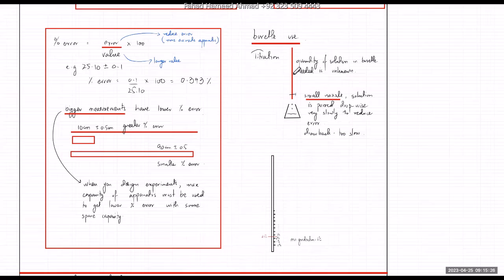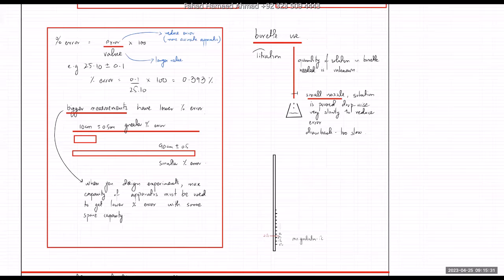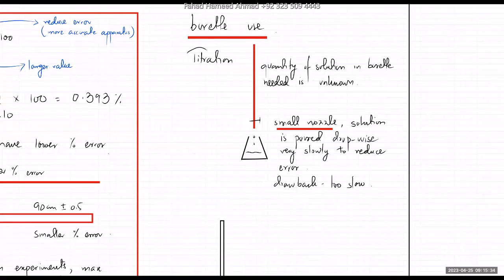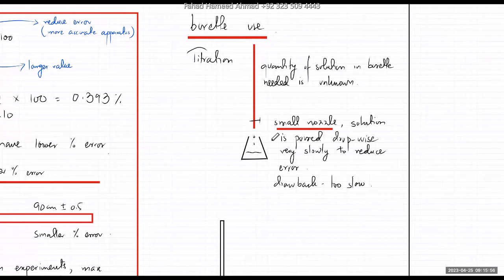One drawback of the burette is that it's very slow in some cases where you want to do things quickly, because the burette has a very small nozzle and solution is poured drop-wise. So if speed is required, the burette is not ideal.